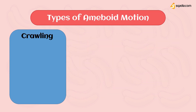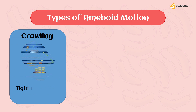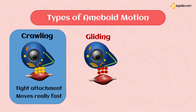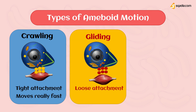There are three types of amoeboid motions. Crawling motion, where the attachment of pseudopodium with surrounding tissue is tight — this motion is really fast. Gliding motion, where the attachment of pseudopodium with surrounding tissue is loose — this motion is a bit slower.